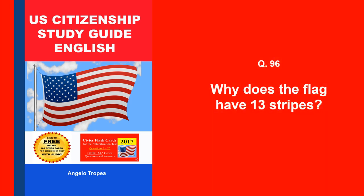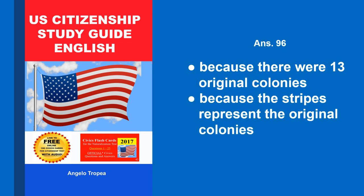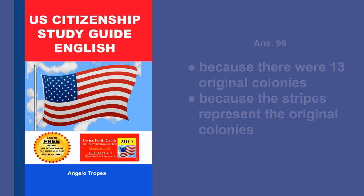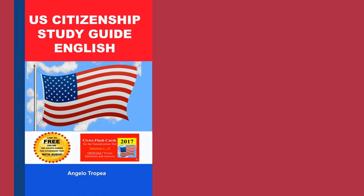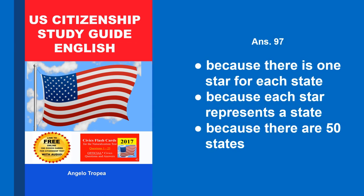Why does the flag have 13 stripes? Because there were 13 original colonies. Because the stripes represent the original colonies. Why does the flag have 50 stars? Because there is one star for each state. Because each star represents a state. Because there are 50 states.